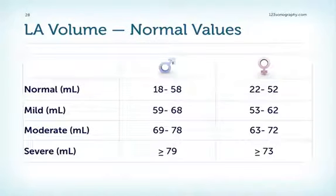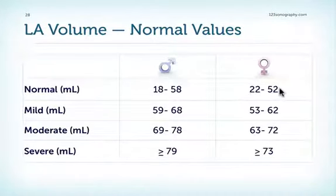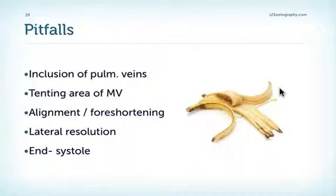Normal values of left atrial volume vary for males and females, with fairly large variation due to fluid status, body surface area, and other factors. Pitfalls to avoid: do not include the pulmonary veins in your contour; do not measure the tented area of the mitral valve; avoid alignment problems and foreshortening; beware of lateral resolution dropouts; and always measure at end systole.